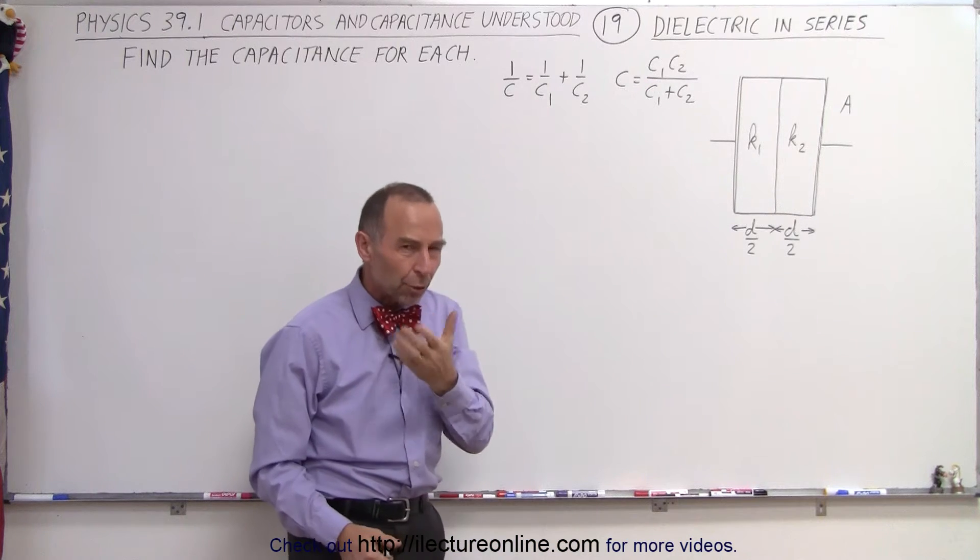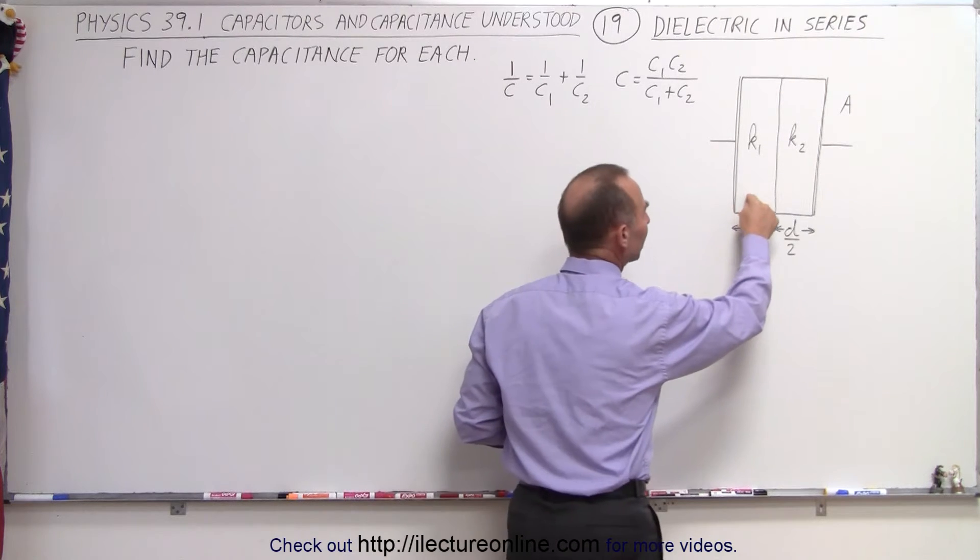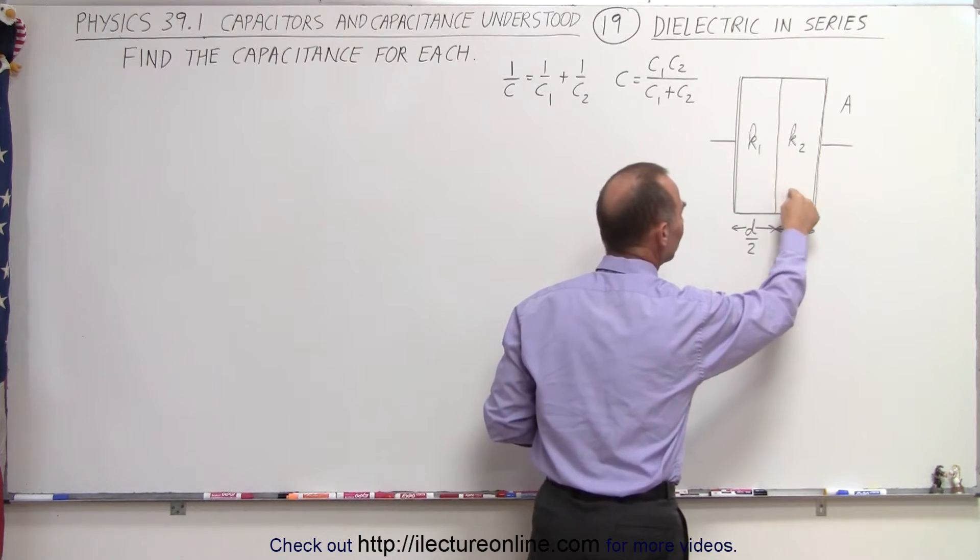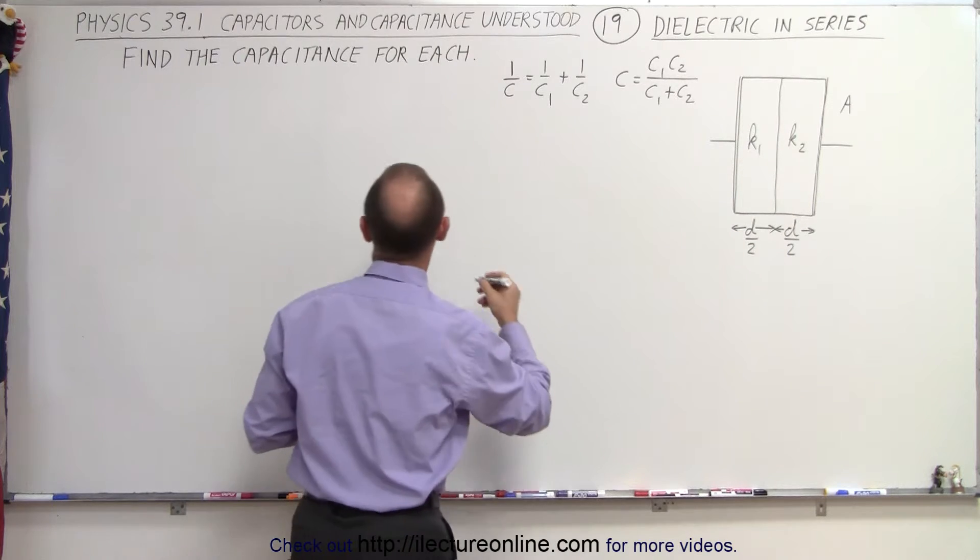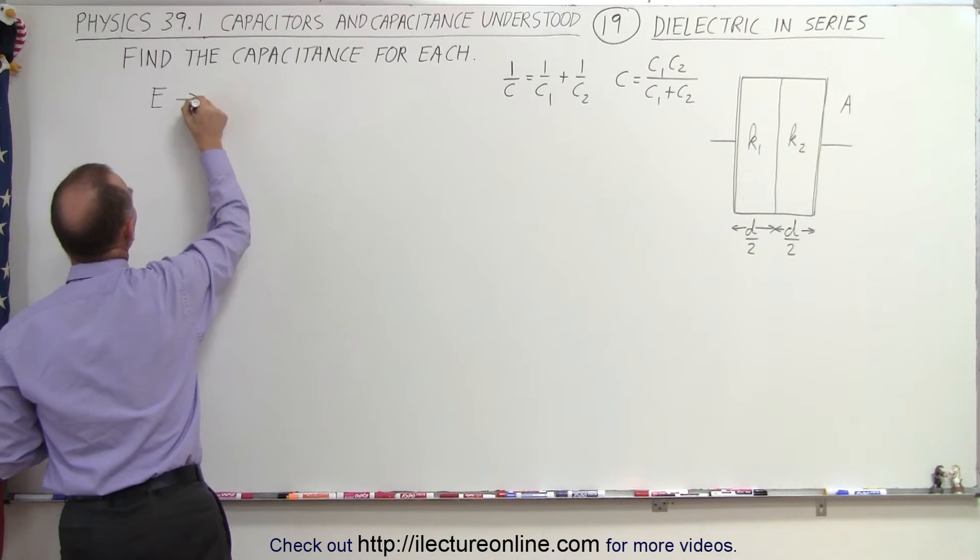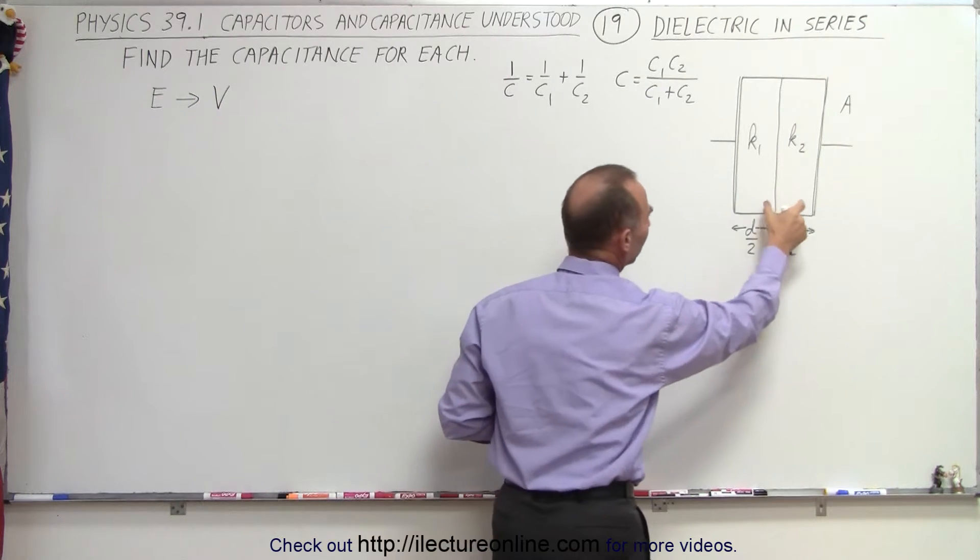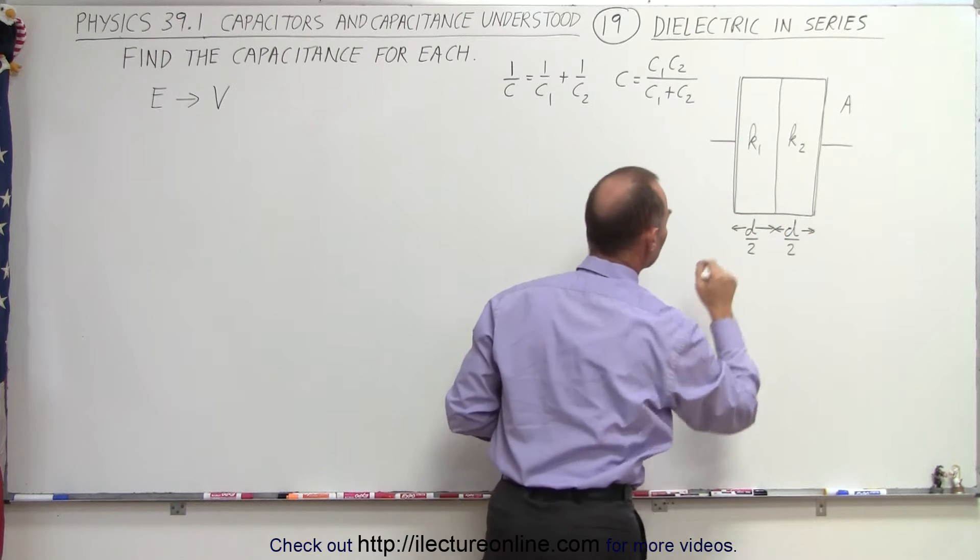But how do we approach this? The way to do that is to first find the electric field in each of the two pieces of the capacitor. So what we're going to do is as follows: we first find the electric field, then from the electric field we're going to find the potential difference across each of the two sections of the capacitor.